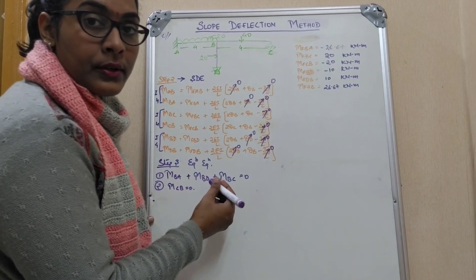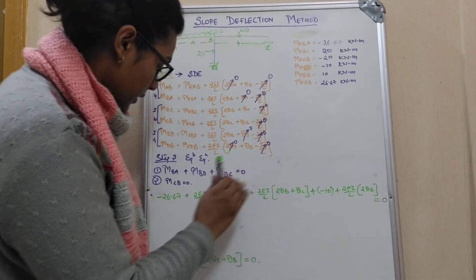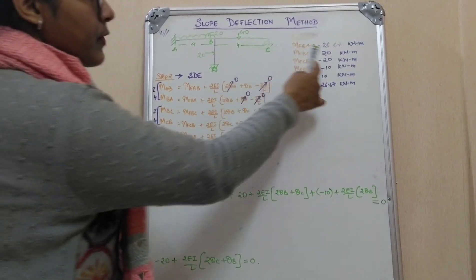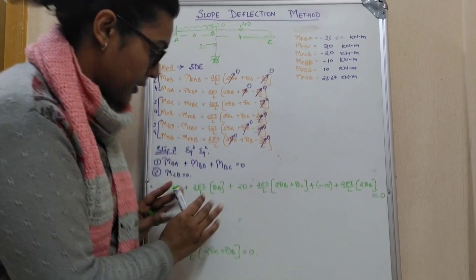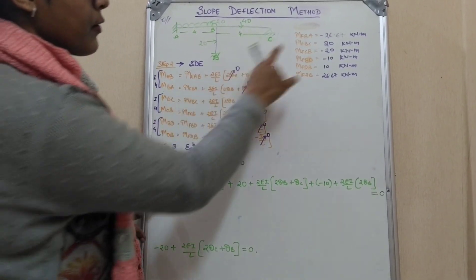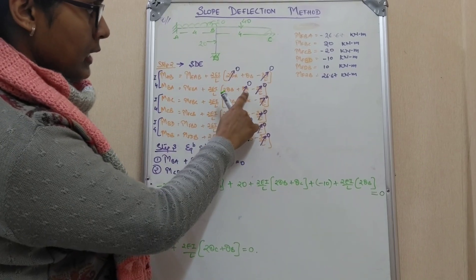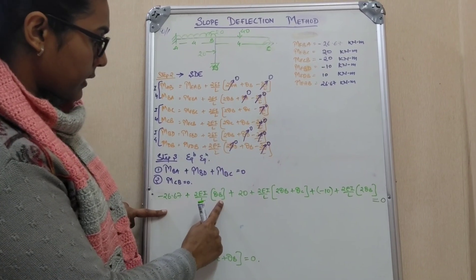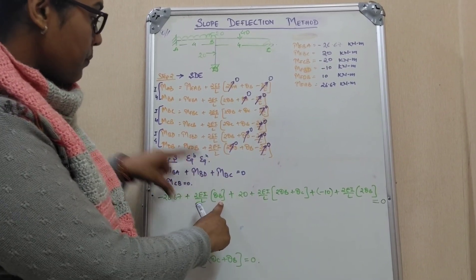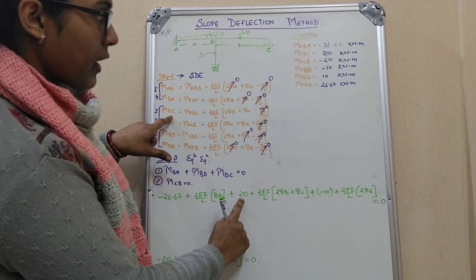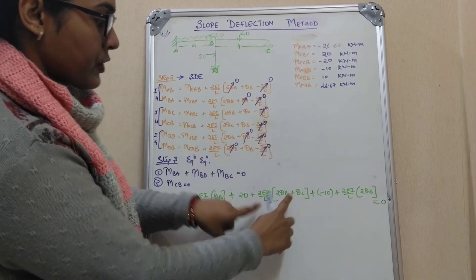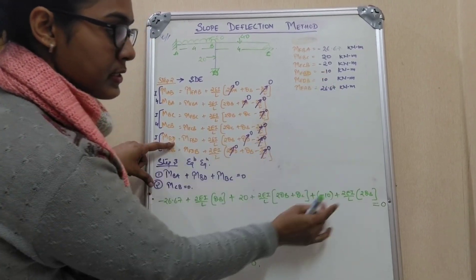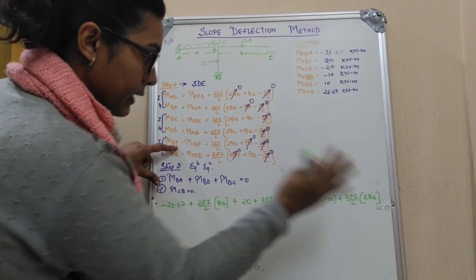We have written all the slope deflection equations and substituted the fixed end moments. For MBA we substituted 26.67, for MBC we substituted 20, and for MBD the fixed end moment is minus 10. We then put the EI and length values — since all lengths are 4 and EI is constant, we simplify accordingly.